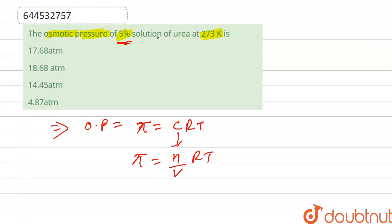Here, 5% solution of urea means 5 grams of urea present in 100 ml of solution. We convert this to liters, that is 0.1 liter. The weight of urea is known - 5 grams - so we find out the